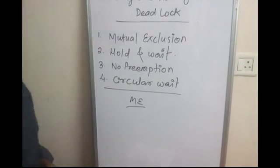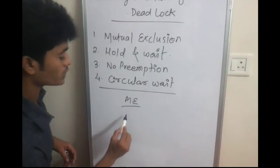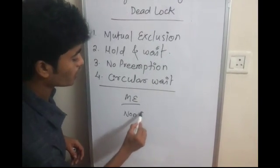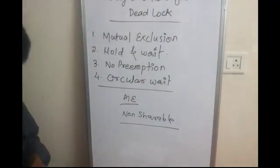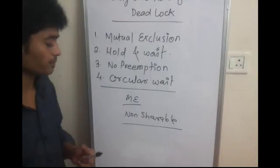In mutual exclusion, there should be at least one resource which is held in non-shareable mode. In non-shareable mode, that resource can only be used by one process at a time. That is mutual exclusion.